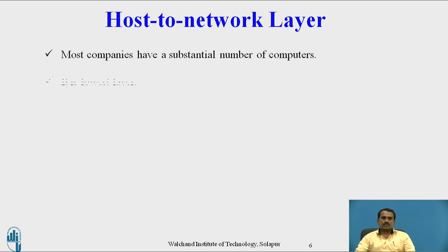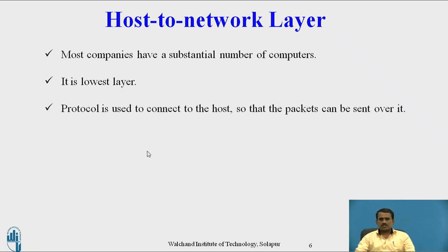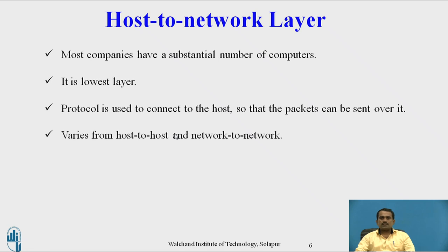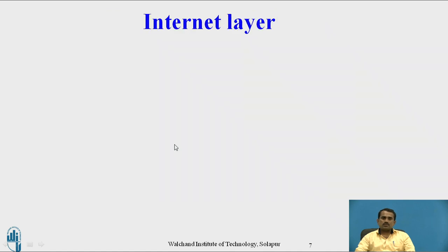The first layer is the Host-to-Network Layer, which combines the Physical and Data Link layers. Most companies have a substantial number of computers used for sharing resources, sharing information, saving time, and saving money. It is the lowest layer of both the OSI and TCP/IP Reference Models. The protocol is used to connect the host so that packets can be sent over it. It varies from host-to-host and network-to-network.